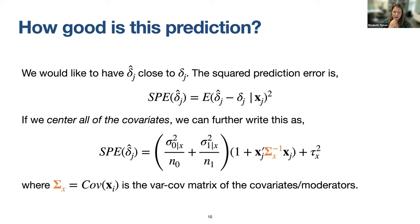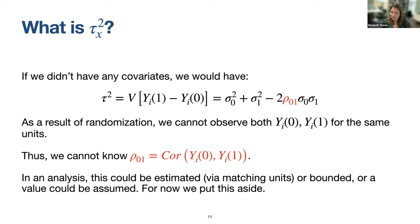Tau-X-squared is our fundamental problem. Without any covariates, tau-squared — which we know is not identifiable in causal inference — is a function of variation in Y0 and Y1, but also the correlation between the two. For planning purposes, we'd set different values of this correlation, perhaps using extant data, or estimate it from individual treatment effects. For now, let's assume we know it.